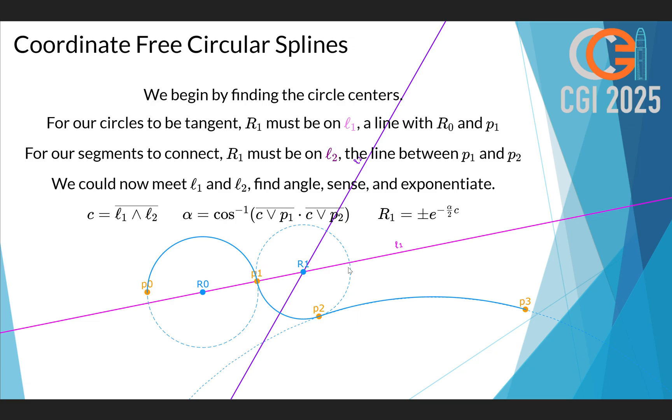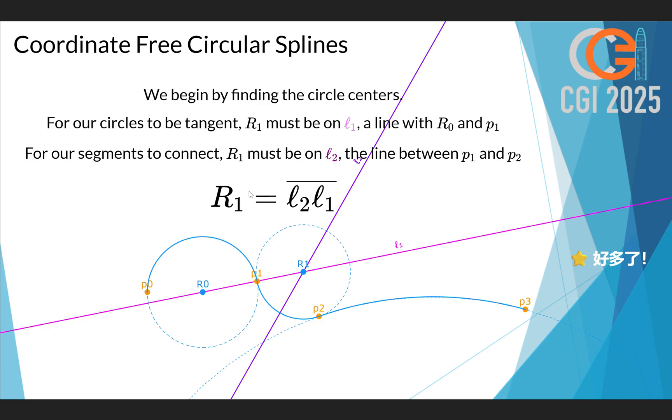But wait a minute. If we take the lines we already found, then twice the angle between them is exactly the rotation we need. So instead of doing all of this, what we can do is just this. We can just take the product of these two lines and normalize it to find our rotor. Now that is the type of coordinate-free solution that we are looking for.